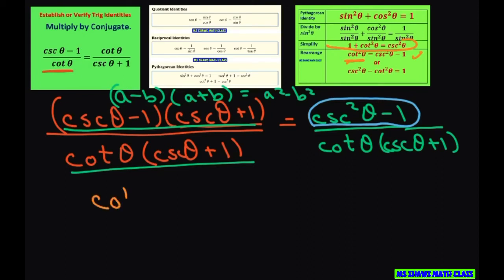We get cotangent squared of theta. In fact, instead of square, I'm just going to write it down twice, because there's two of them. That's cotangent squared. All right, you have cotangent of theta times cosecant theta plus 1.